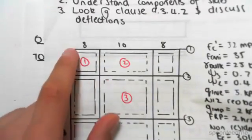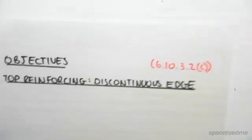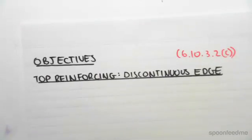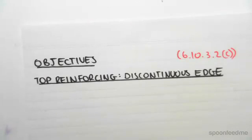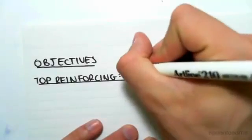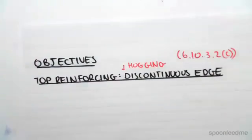Now we're looking at the discontinuous edge, which is there and there. Once again, it's top reinforcing because our slab will be hogging in that region. So we call this the top reinforcing, and this is because this is hogging. The steel reinforcement has to be at the top to take the hogging moment because that's where the tension will be.